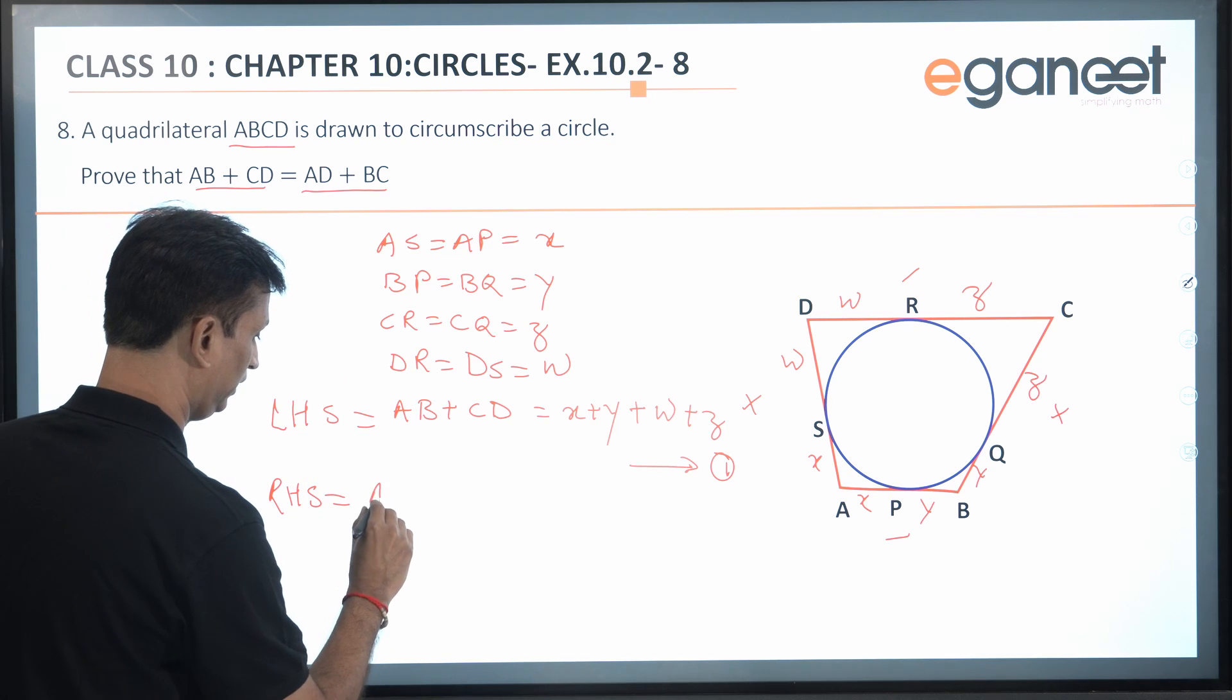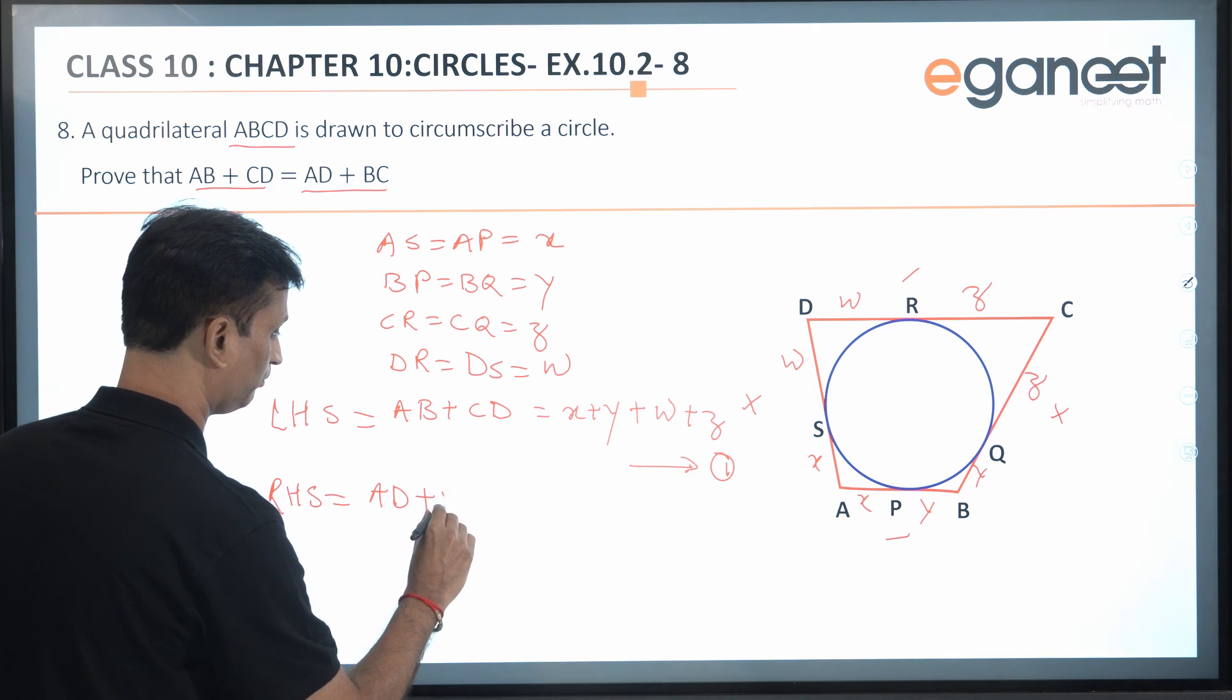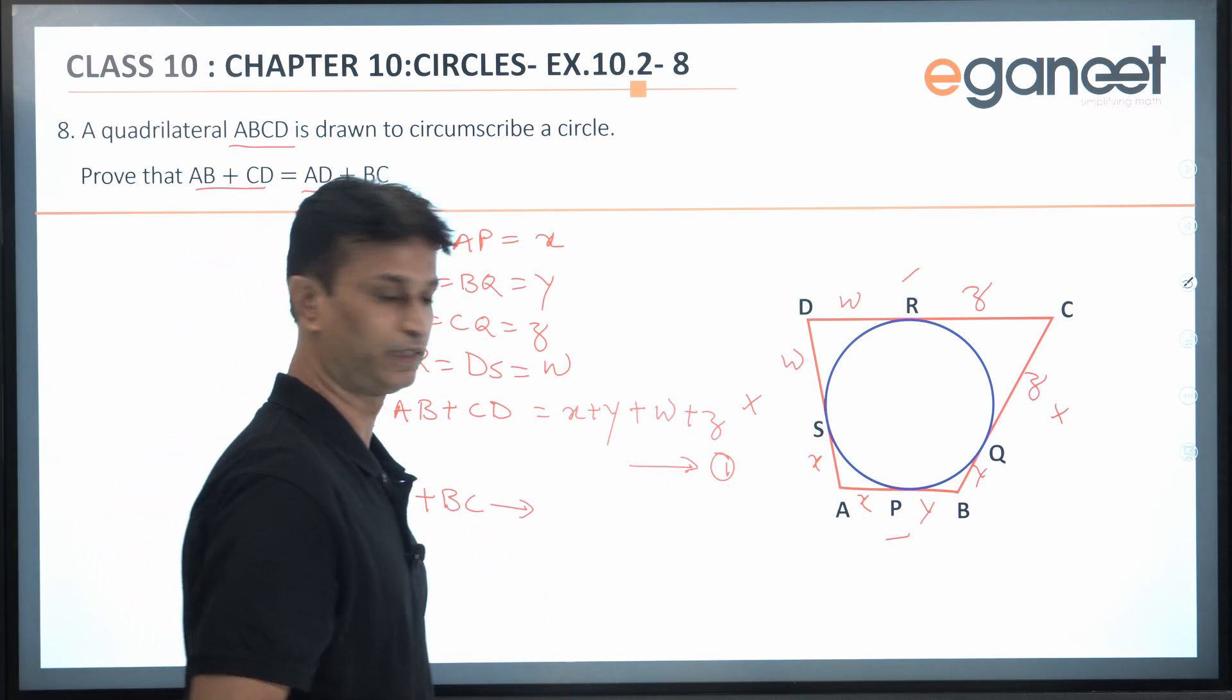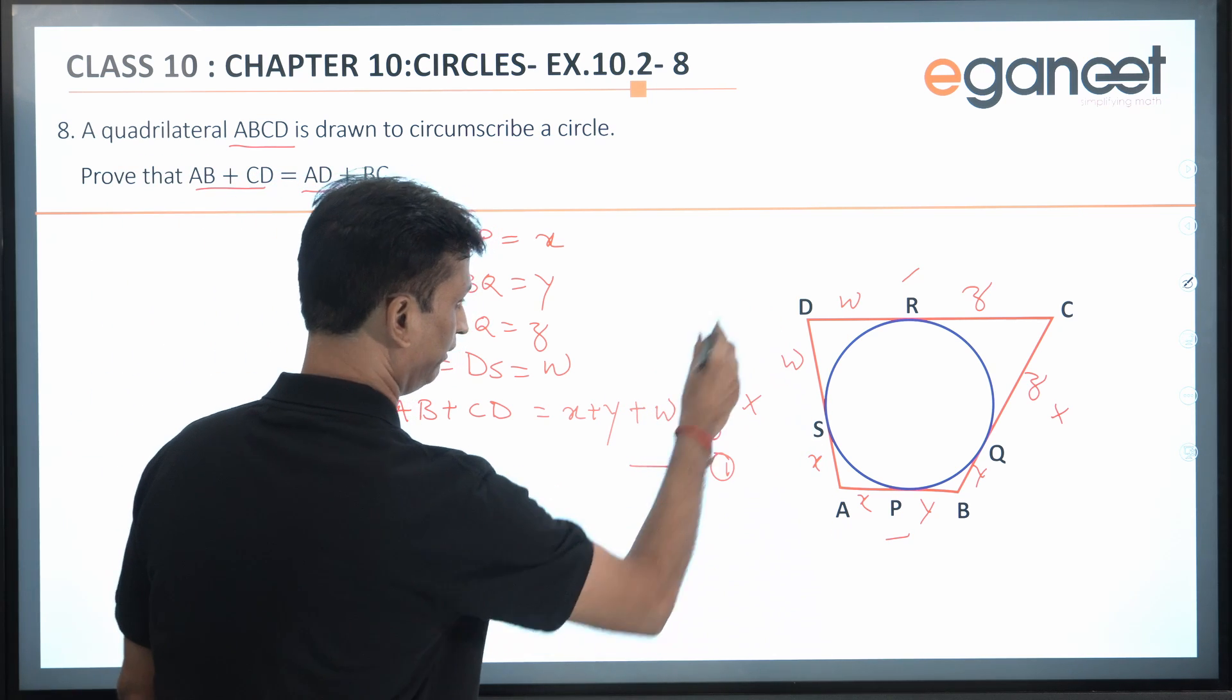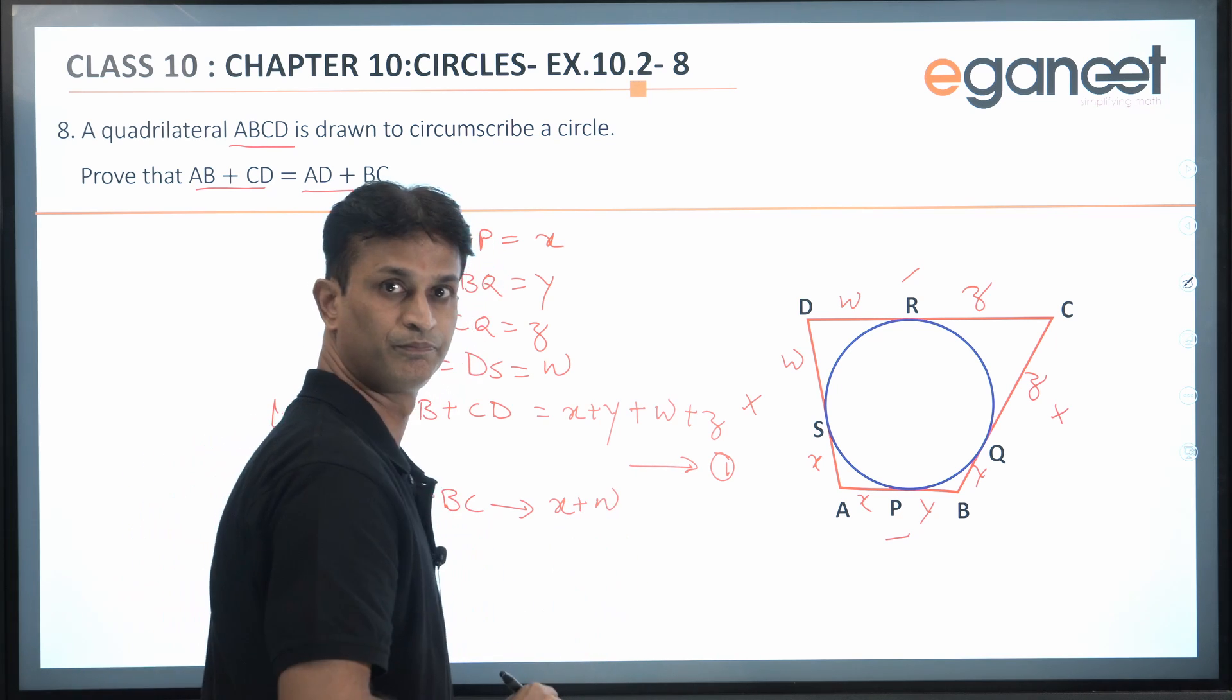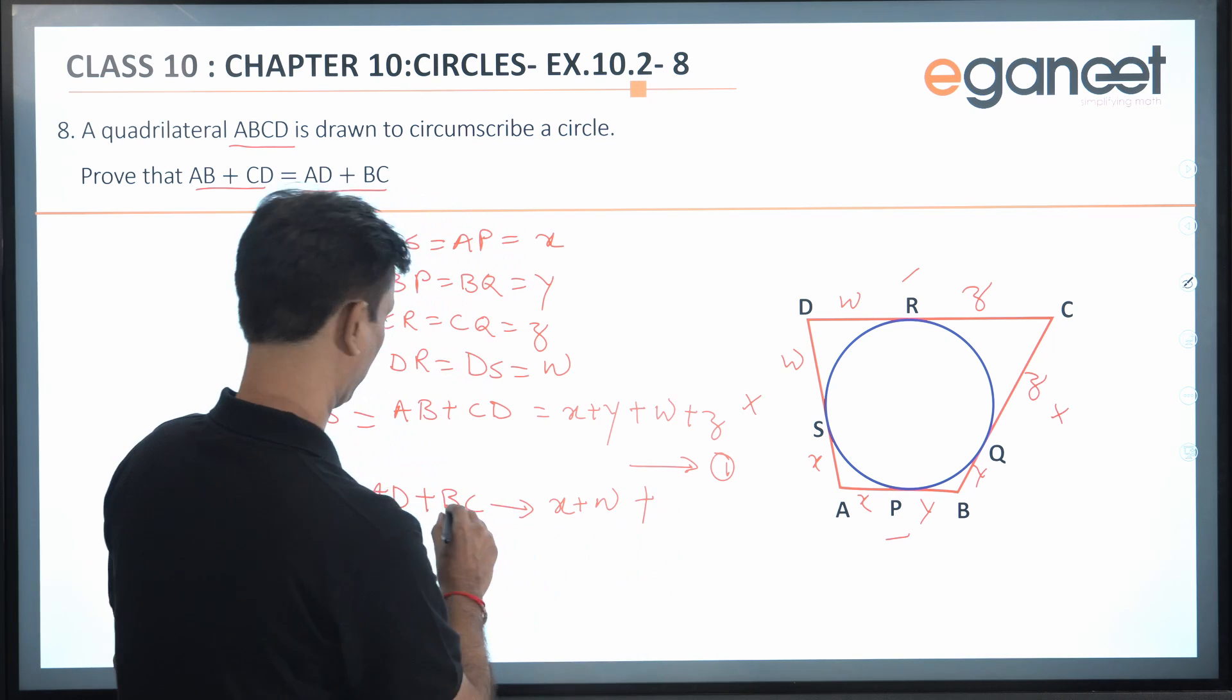We call this as equation 1. In the RHS, we are having AD + BC. So from the figure, what will be AD? AD will be x + w. What will be BC?